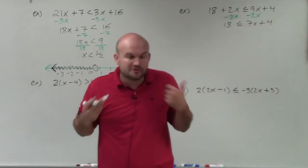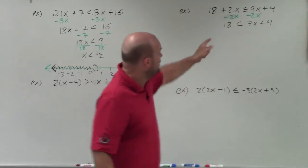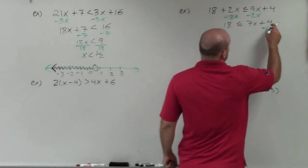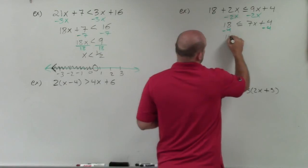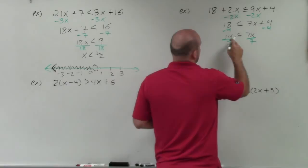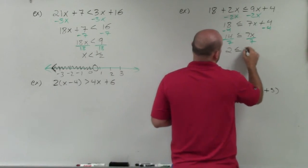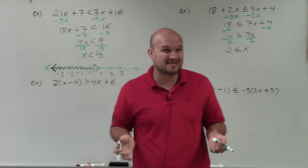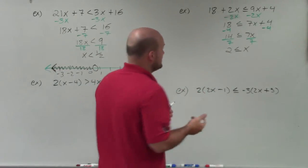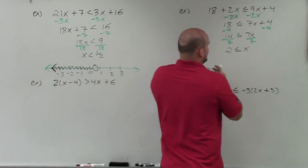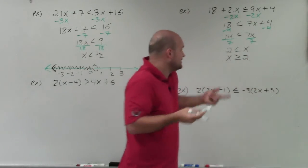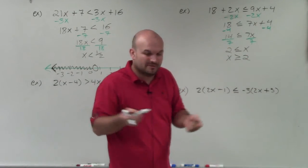It's OK that the variable is on the right-hand side. You look at your variable and see it's being multiplied by 7 and added by 4. So we undo addition first — subtract 4 on both sides — and I have 14 is less than or equal to 7x. Now undo multiplication by 7, so I divide by 7, and I get 2 is less than or equal to x. A lot of times that's difficult for students to graph, so I recommend rewriting it with the variable on the left-hand side: x is greater than or equal to 2. These are equivalent — it just makes it a little bit easier to graph.